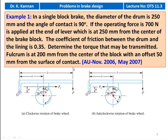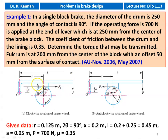This is the single block brake. In the example the direction of rotation is not given, so we consider both cases: clockwise rotation as well as the anticlockwise direction. O is the fulcrum and A is the offset distance. C is the center of the brake block, L is the total length of the lever, and X is the position of the center of the block from the fulcrum O.